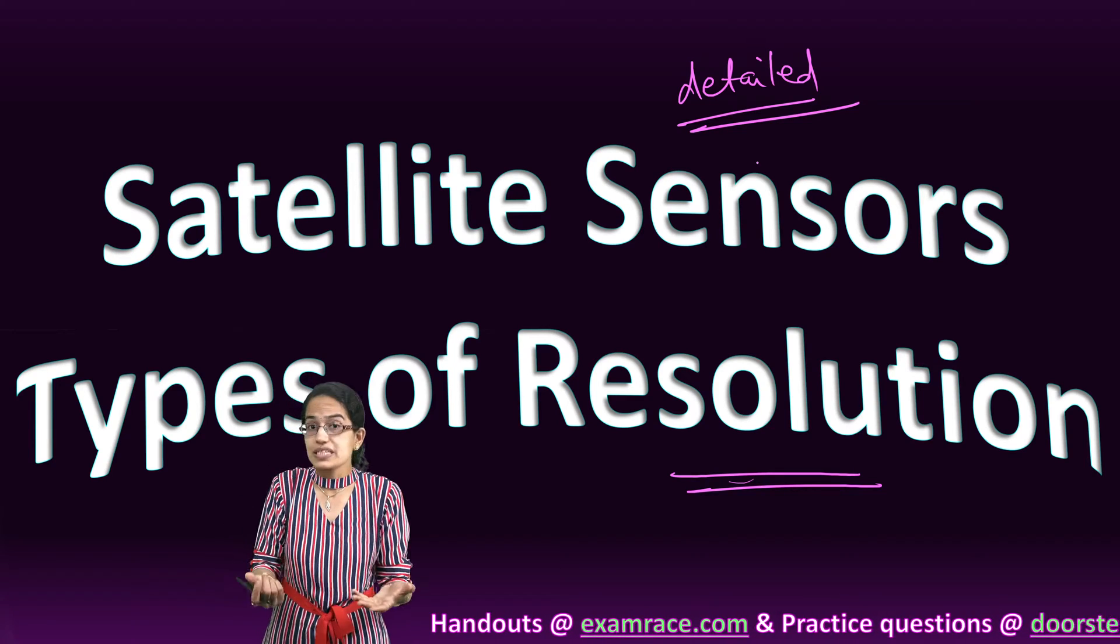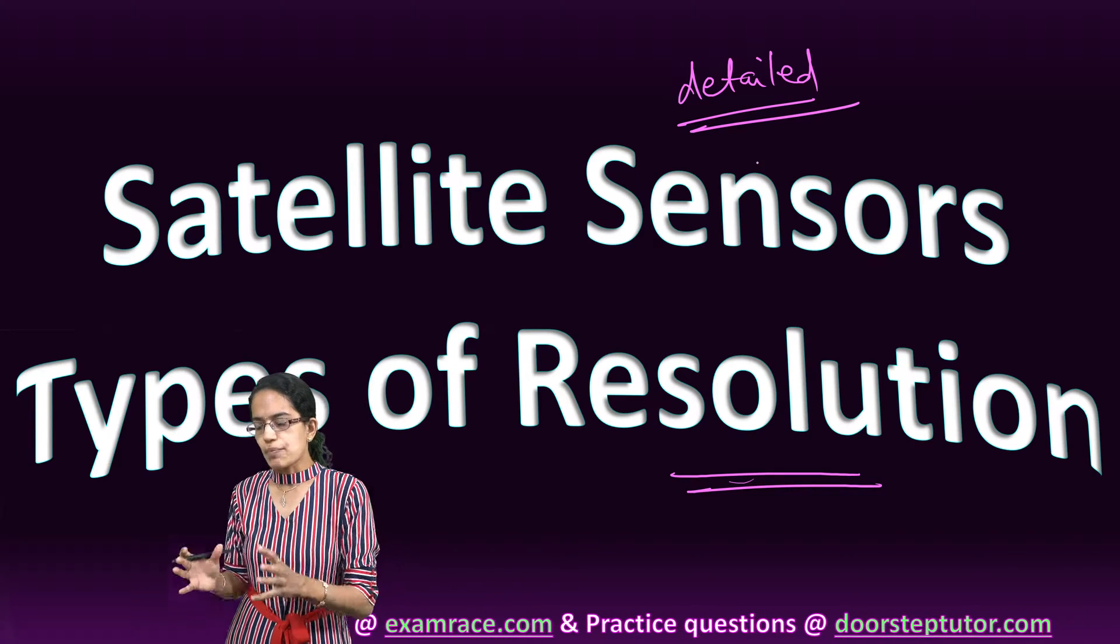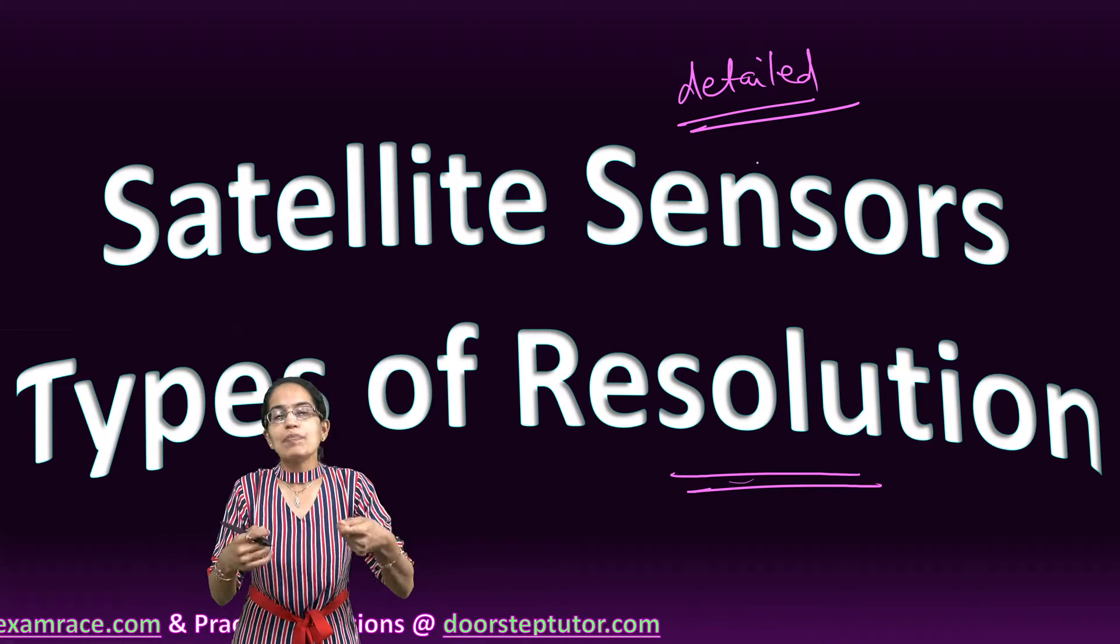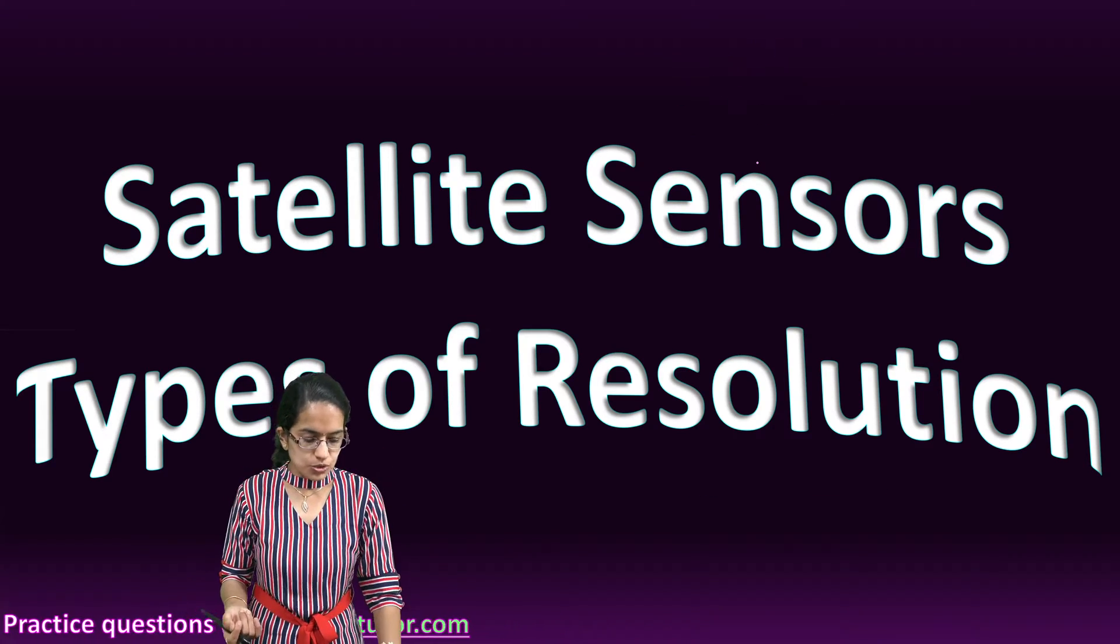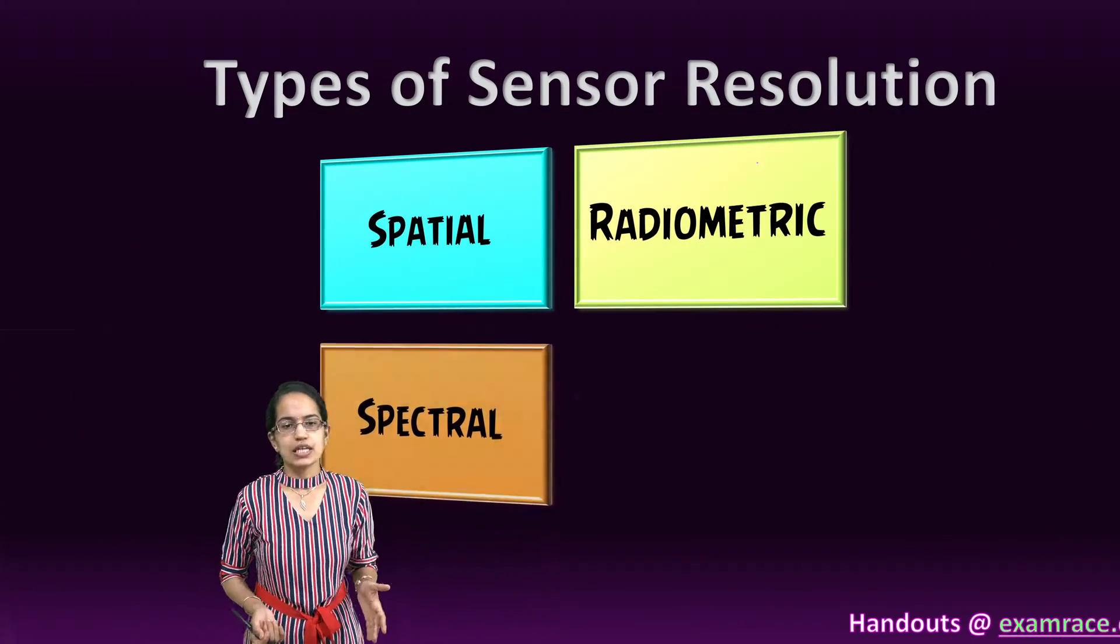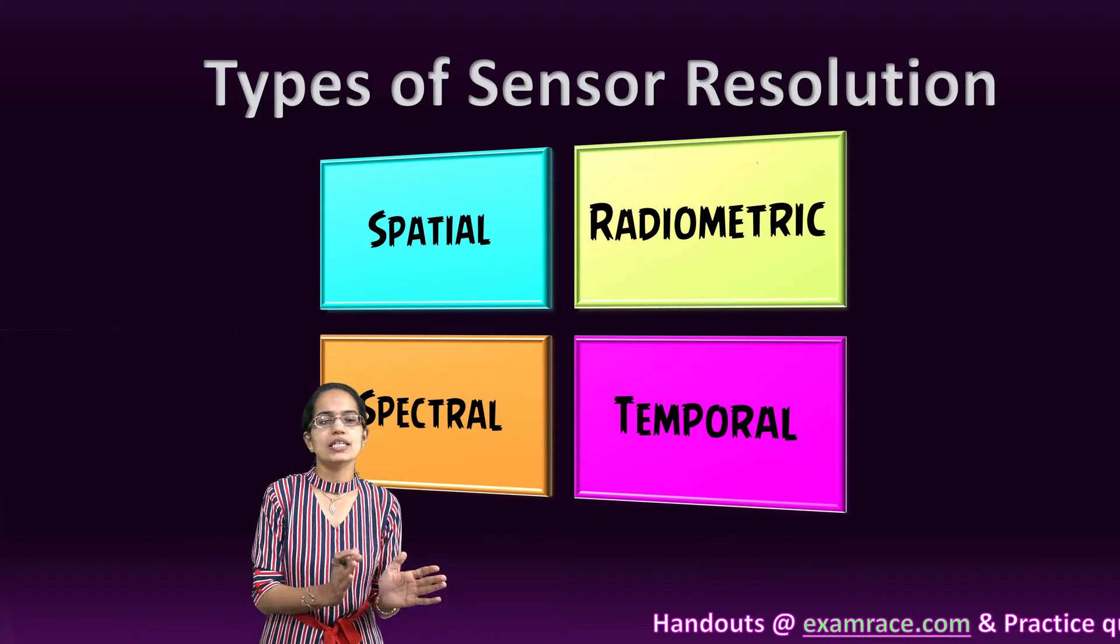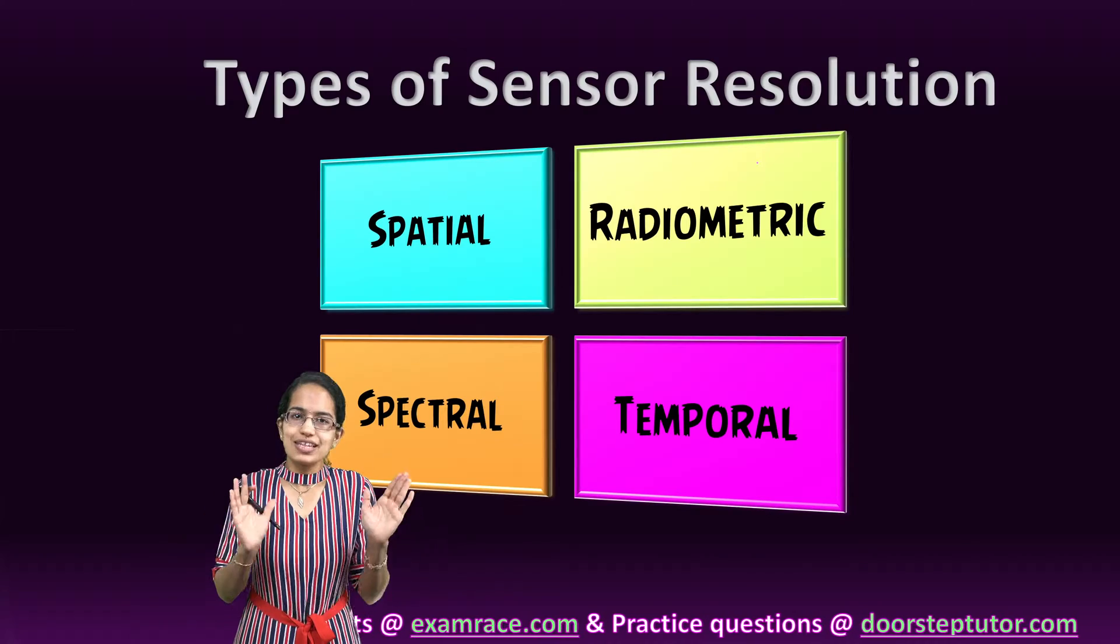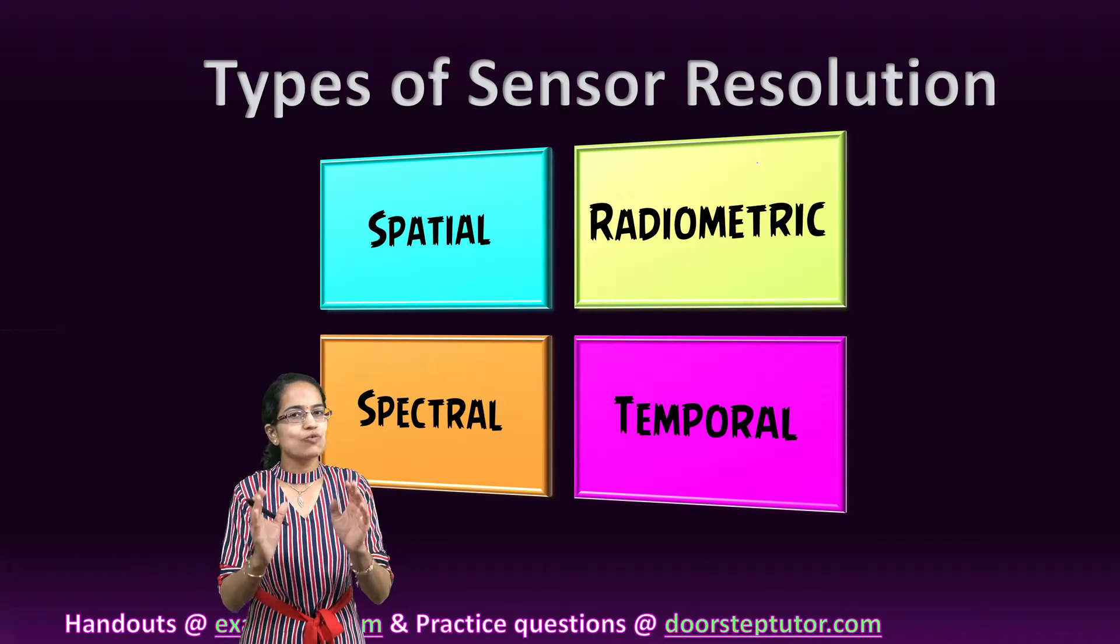So this was a simple example of spatial resolution. When we talk about resolutions, the satellite sensors actually help us understand the resolution and there are four types of resolution that we focus on: spatial, radiometric, spectral, and temporal. What is the difference between these four types of resolution is very important.